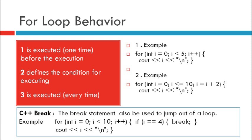For loop behavior: Statement 1 is executed one time before the execution of the code block. Statement 2 defines the condition for executing the code block. Statement 3 is executed every time after the code block has been executed. The example below will print the numbers 0 to 4: for (int i = 0; i < 5; i++) { cout << i; }.